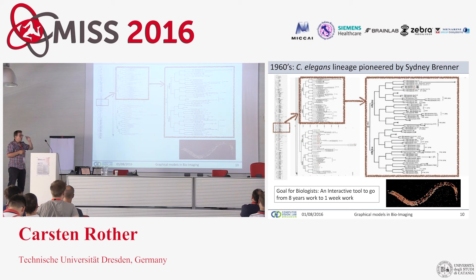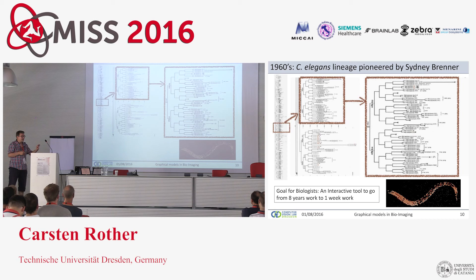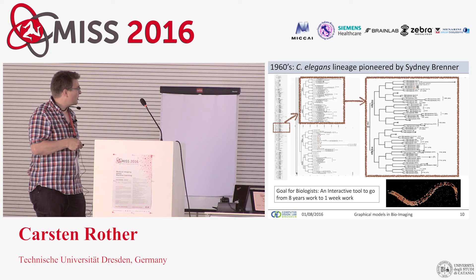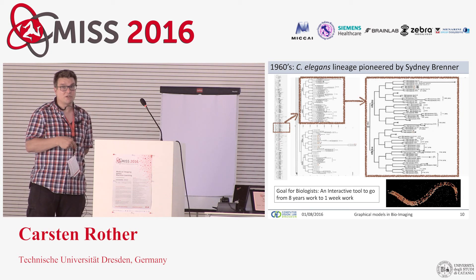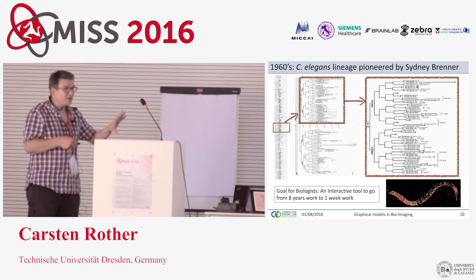That's called a lineage tree - the whole division of these cells over time. People have actually been doing this since the 1960s for C. elegans, spending eight years studying many instances of this worm over many time steps and manually annotating all of the nuclei where they move and when they divide. Our goal in Dresden is to go from eight years of work to probably one week of work with an interactive tool.